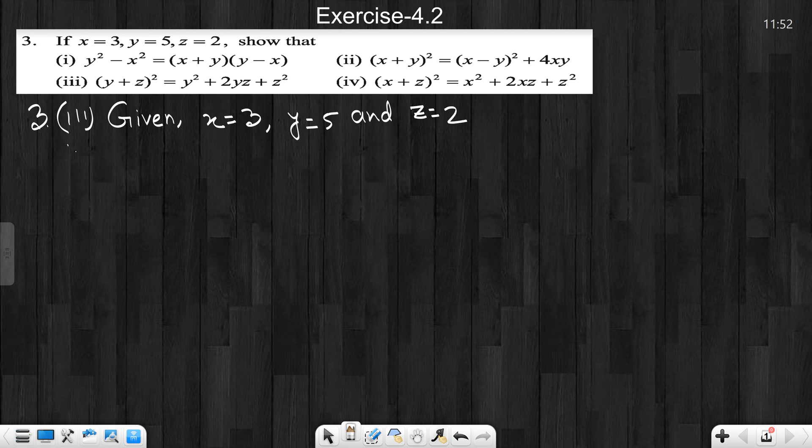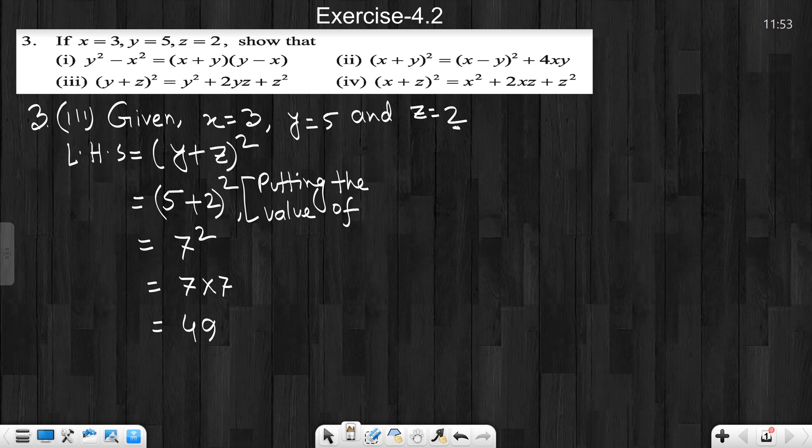Now 3 left hand side. 3 left hand side is y plus z whole square. y equals 5, plus z equals 2, so we write 5 plus 2 whole square. 5 plus 2 is 7, 7 whole square. 7 square means 7 times 7 is 49. We write putting the value of y and z. Left hand side is 49.